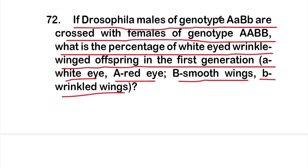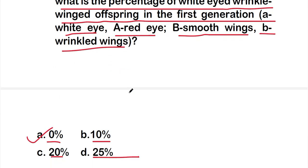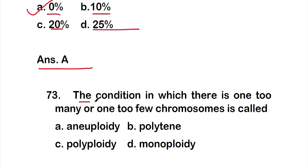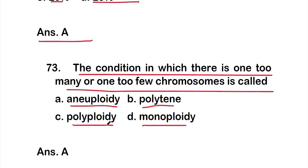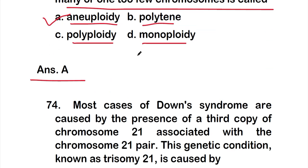Question 73: the condition in which there is one too many or one too few chromosomes is called — Option A: aneuploidy, Option B: polyteny, Option C: polyploidy, Option D: monoploidy. The right answer is Option A — aneuploidy. The condition of one too many or one too few chromosomes is called aneuploidy.